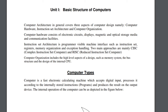Hardware, as we all know, consists of electronic circuits, display, magnetic and optical storage data, and its communication facilities. From the definition itself, it's the tangible parts — the parts that we can touch.